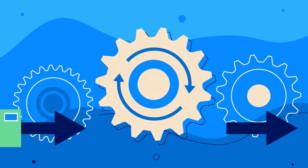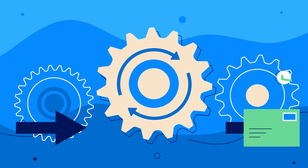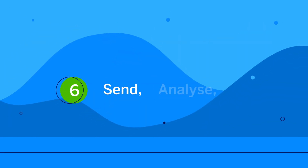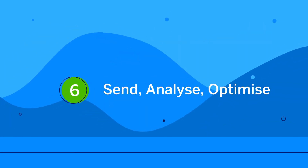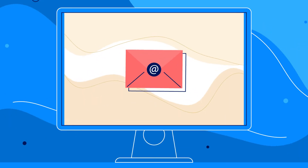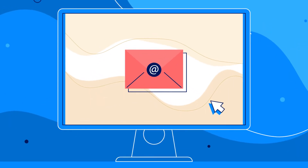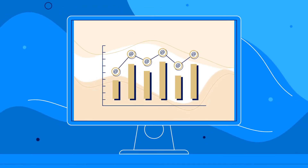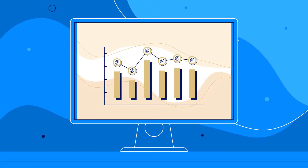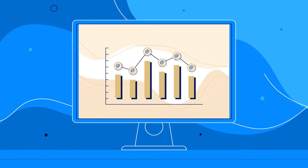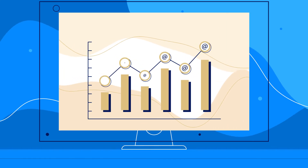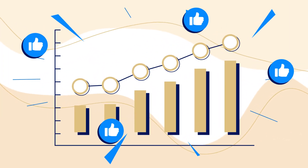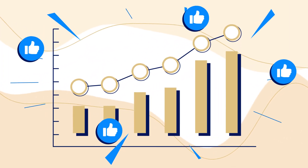Finally, send a test email to make sure everything works as intended. Once you're happy, take a deep breath and send. Your email marketing platform will start tracking the performance of your campaign, and you'll be able to assess how your campaign is performing by measuring engagements in your dashboard.